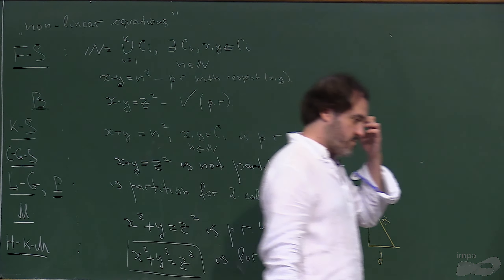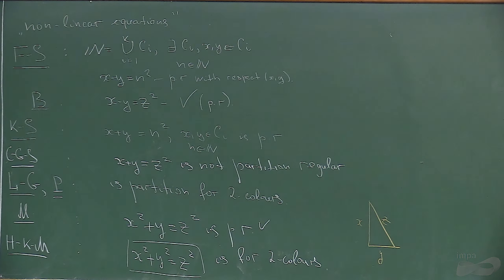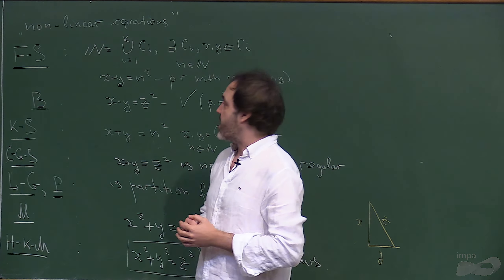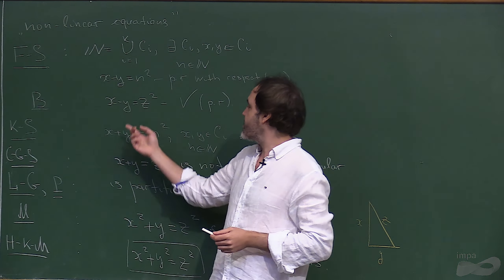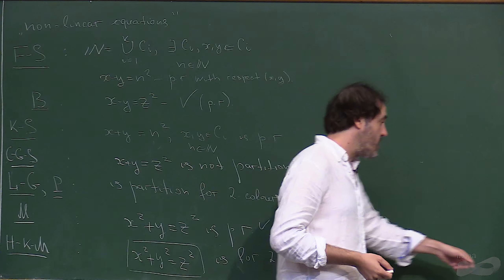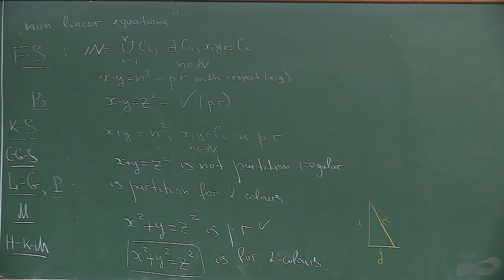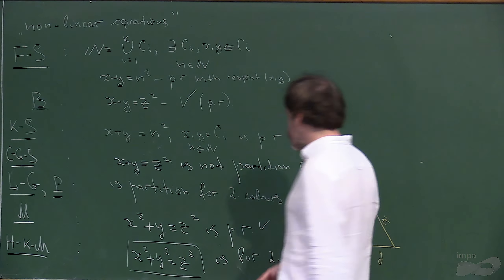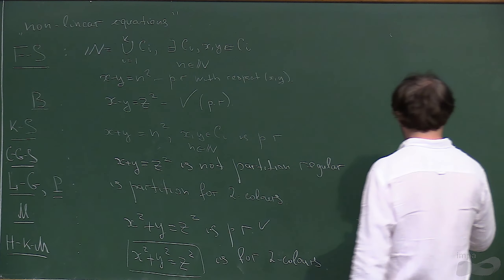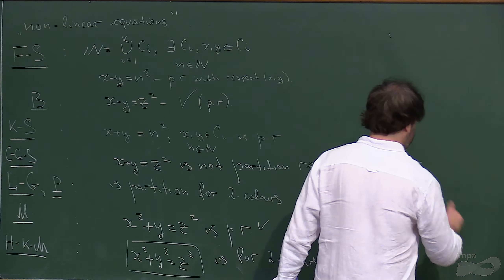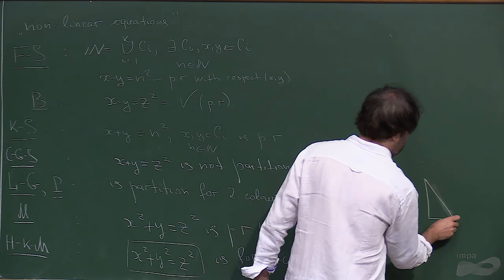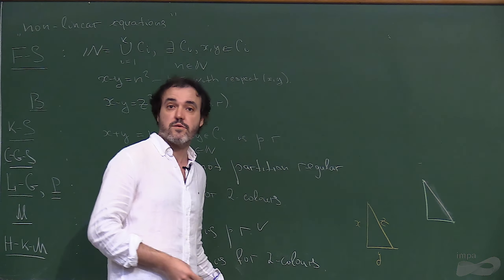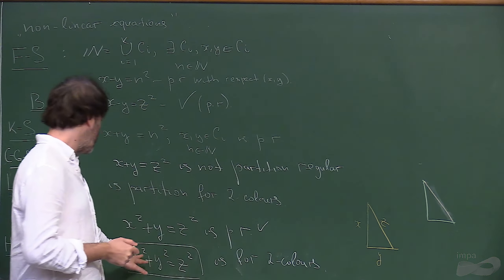Some time after this conjecture was stated, people realized it makes sense to ask a weaker question: the Pythagorean pairs problem. In the spirit of the Furstenberg-Sárközy theorem, can we at least guarantee that two sides of this right-angle triangle are the same color, with the hypotenuse possibly a different color? So: no matter how we partition numbers into k colors, can we always find two sides of a Pythagorean triple of the same color?